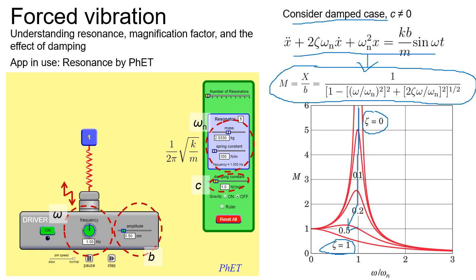With this understanding of the magnification factor, we can appreciate the design mindset for vibration systems. To reduce the response of the system, there are at least two approaches: first, increase damping by redesigning the system; second, work out the ratio of omega to omega_n — either change the driving frequency omega if possible, or change the natural frequency omega_n — to move the ratio further away from one, to the left or to the right.